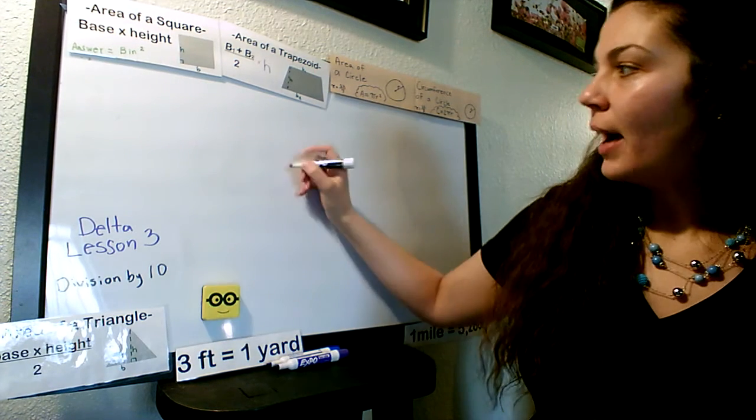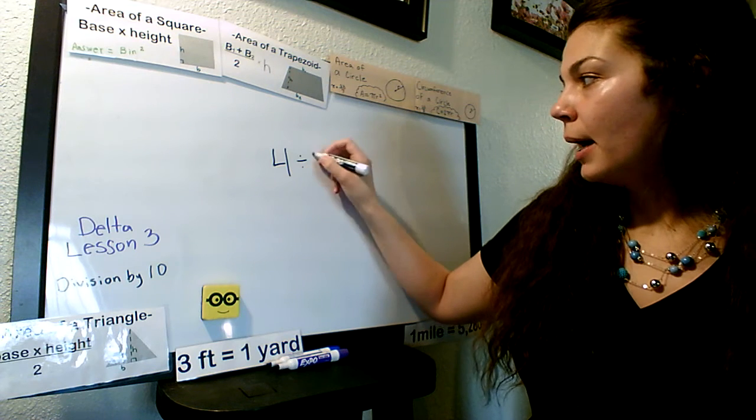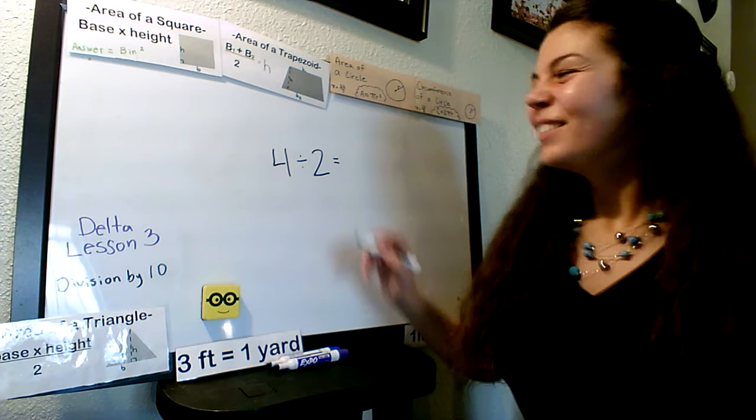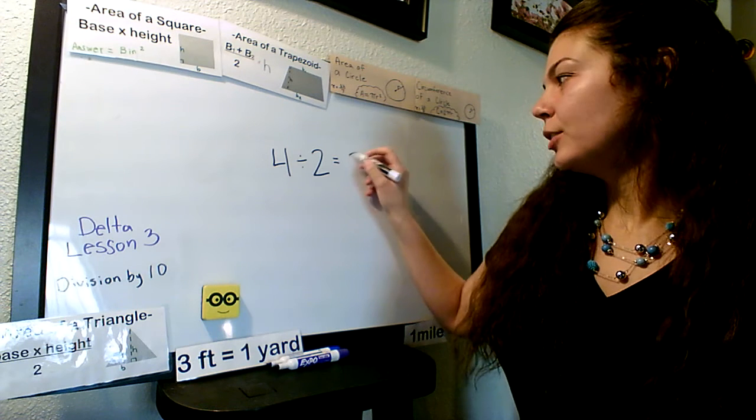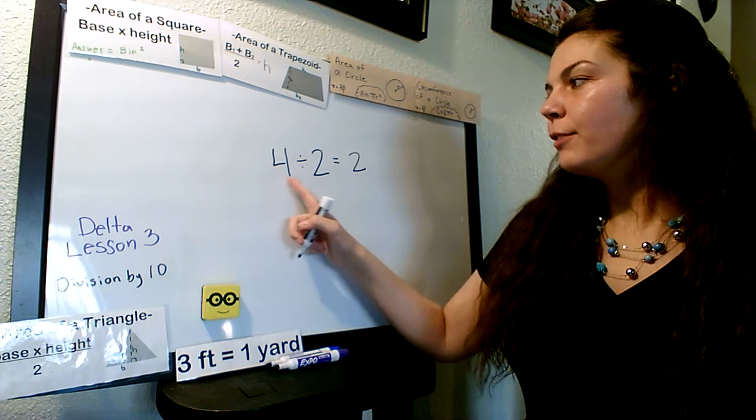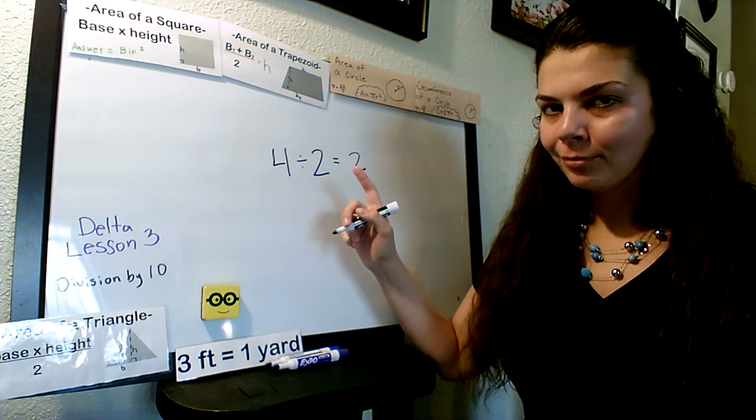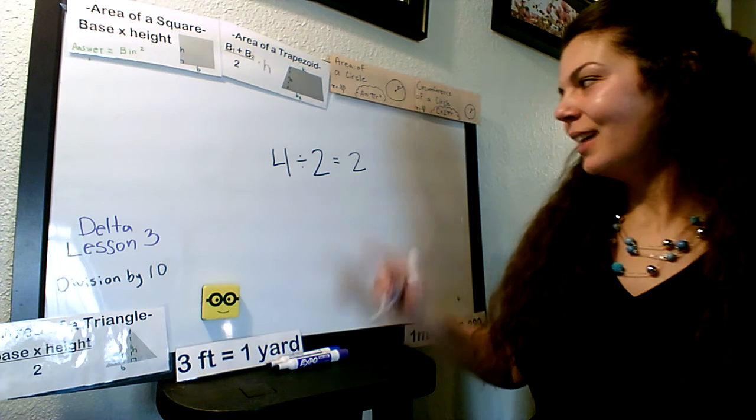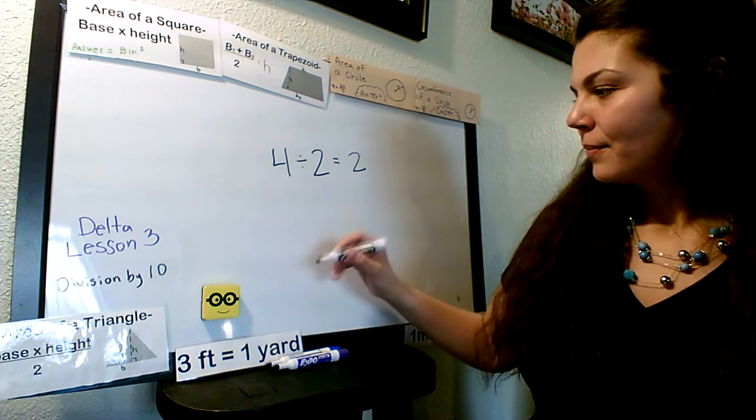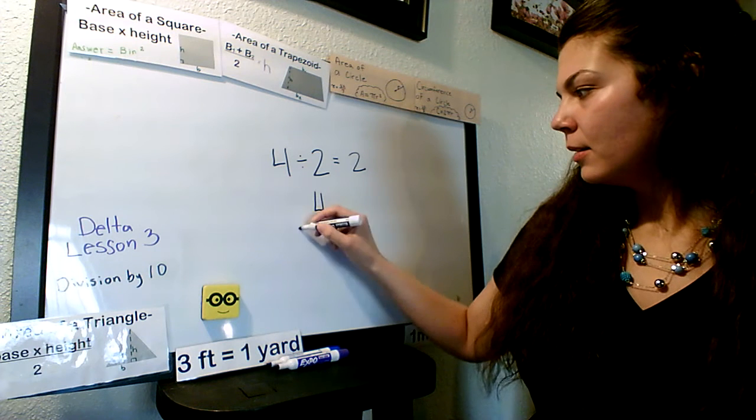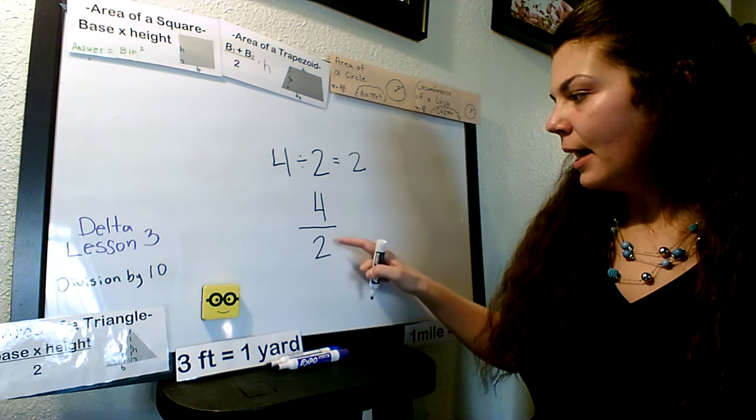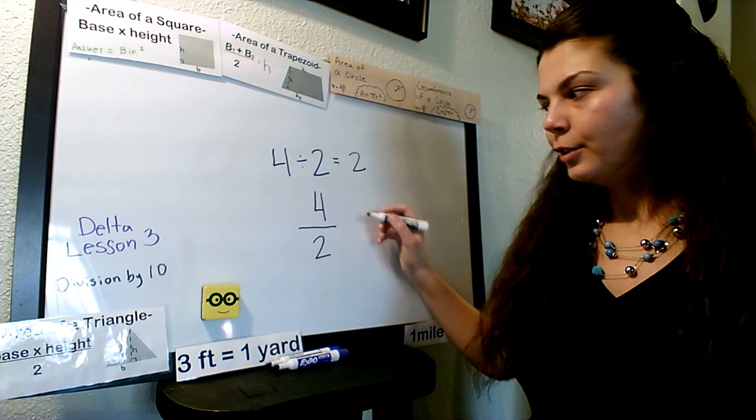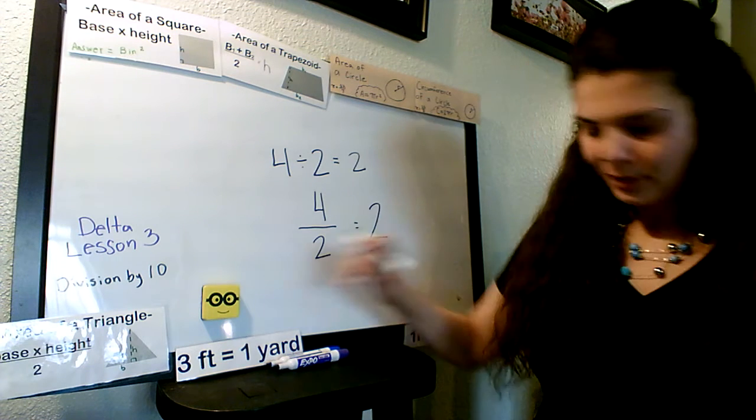So if I have four divided by two, what is that? Four divided by two is two, which means how many twos go into four? There's two twos in four. It's the same as this. How many twos go into four? Two.